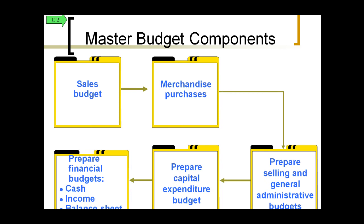A master budget will have the following components: sales, purchases, and financial budgets — which include the income statement, balance sheet, and cash. It will also have capital expenditures, which are major projects being purchased or expended, helping determine how much is needed, when, and for what. And there are selling and general administrative budgets, which track overhead costs for people not directly involved in generating revenue.